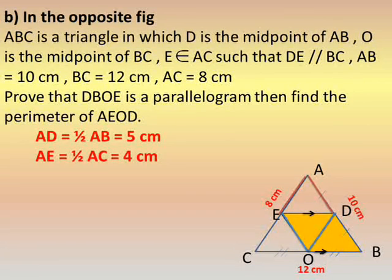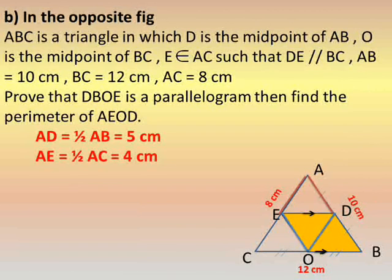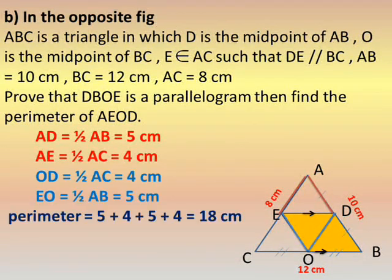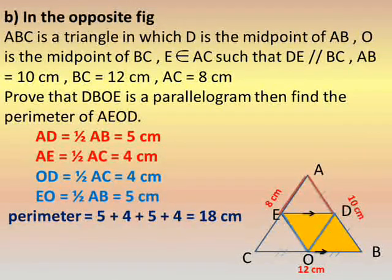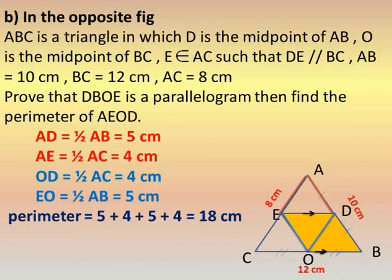Now find the perimeter of AEOD. AD is half of AB; AB equals 10, so AD equals 5 cm. AE is half of AC; AC equals 8, so AE equals 4 cm. DO is a segment joining two midpoints, so DO equals half the third side, which is half of AC: half of 8 equals 4 cm. EO also joins two midpoints, so EO equals half of AB: half of 10 equals 5 cm. Perimeter equals 5 plus 4 plus 4 plus 5 equals 18 cm.